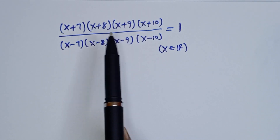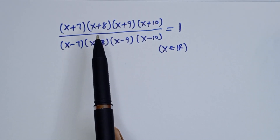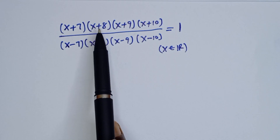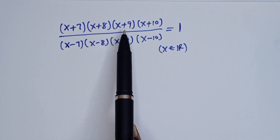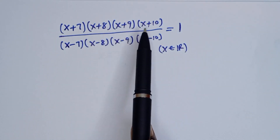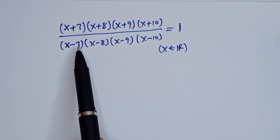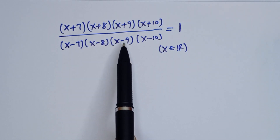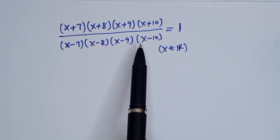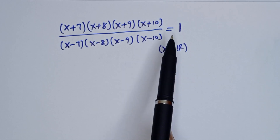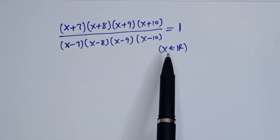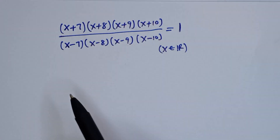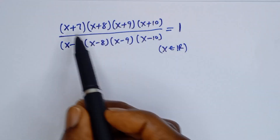Welcome to Magist. How to solve for S from this beautiful algebra problem. S plus 7, bracket S plus 8, bracket S plus 9, bracket S plus 10, divided by S minus 7, bracket S minus 8, bracket S minus 9, bracket S minus 10, is equal to 1, where S is a member of real numbers. Now here we can compare this.